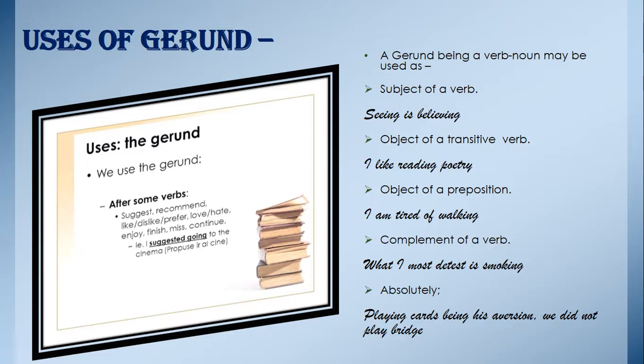First, a gerund being a verb-noun may be used as the subject of a verb. For example: 'Seeing is believing.' 'Hunting deer is not allowed in this country.' Second, it can be the object of a transitive verb. For example: 'I like reading poetry.' 'Stop playing.' 'Children love making mud castles.' 'He contemplated marrying his cousin.'